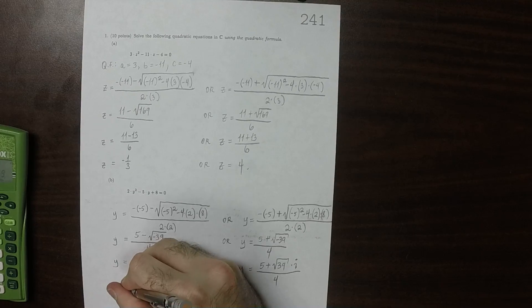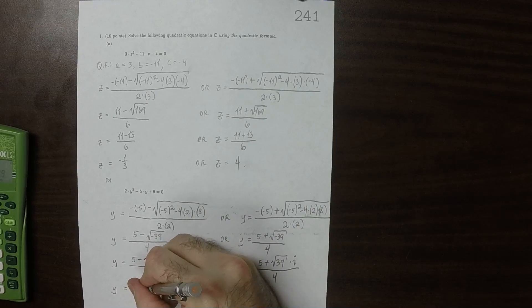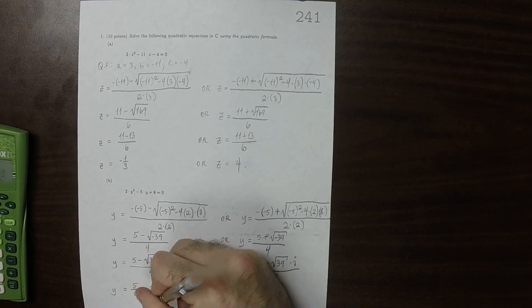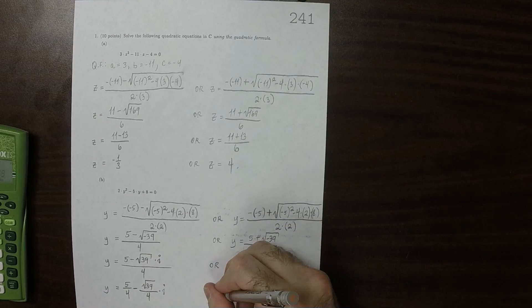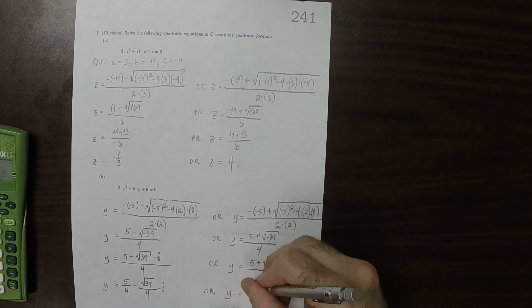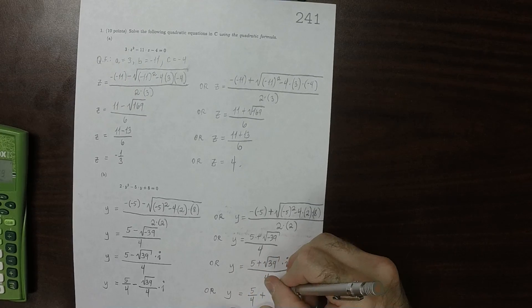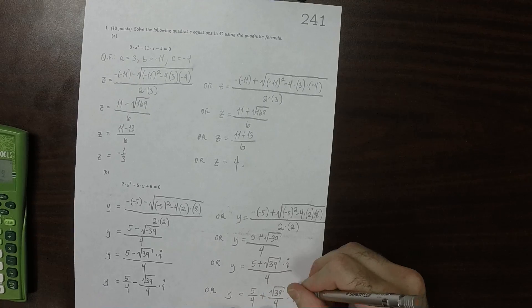So then y is 5 over 4 minus the square root of 39 over 4 i, or y is 5 over 4 plus the square root of 39 over 4 i.